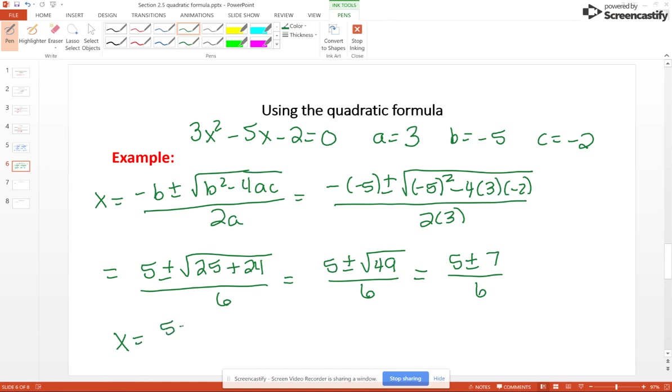So x equals 5 minus 7 over 6, which is negative 2 over 6, which is negative 1 third. And x equals 5 plus 7 over 6, which is 12 over 6, which equals 2.